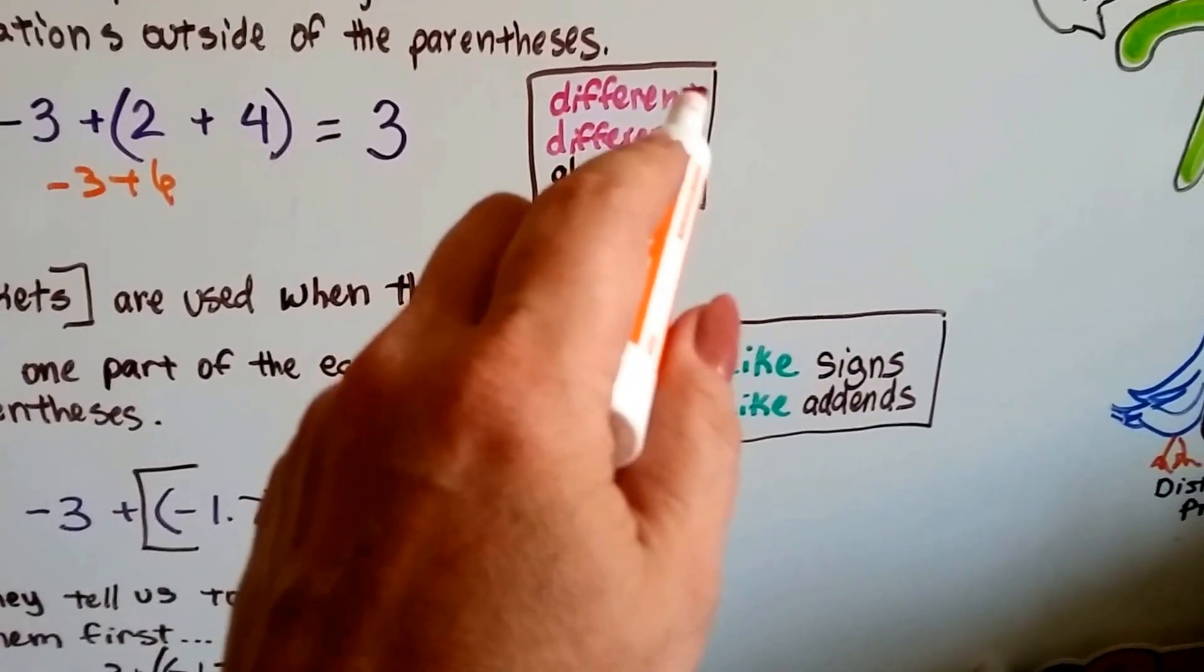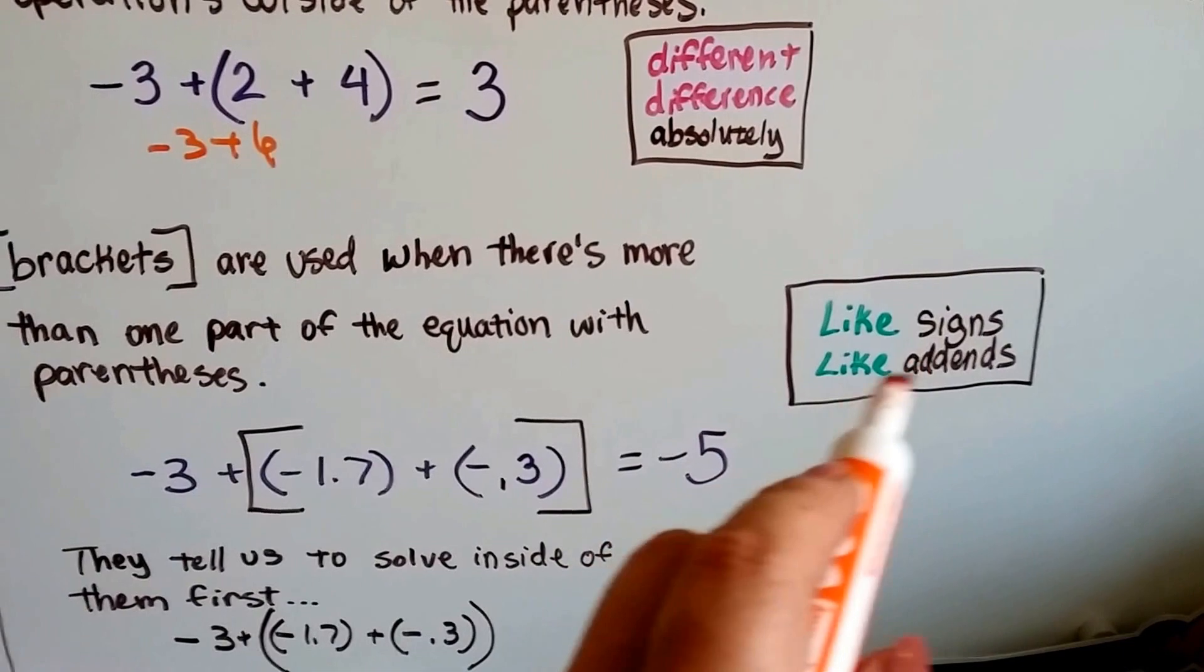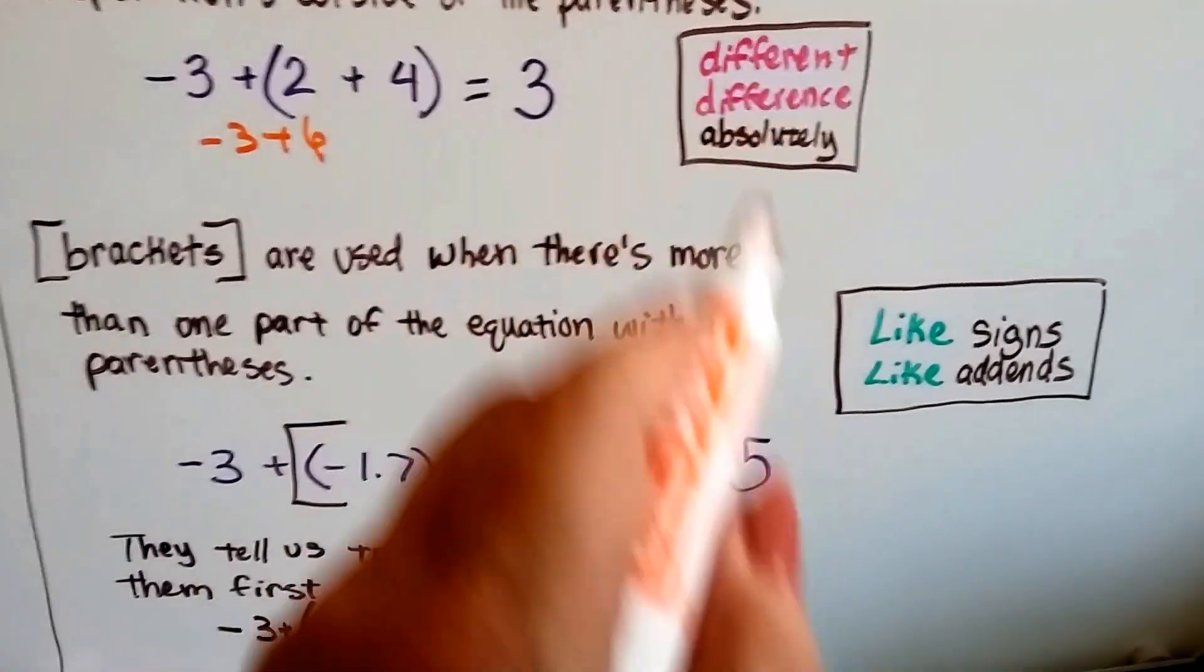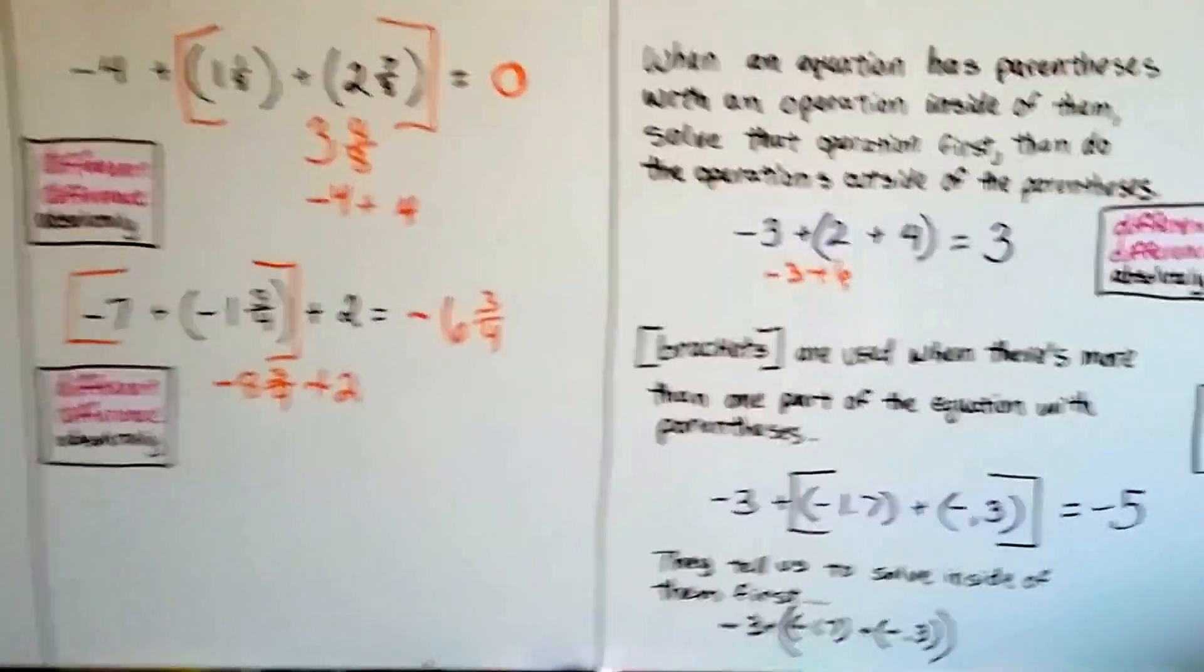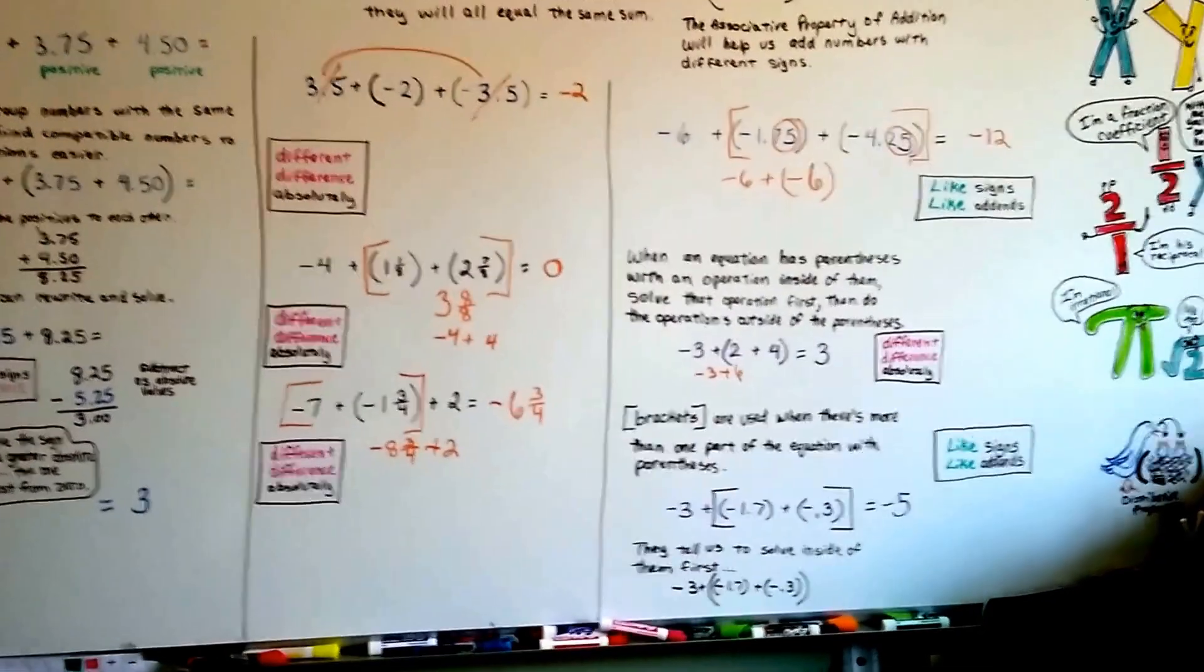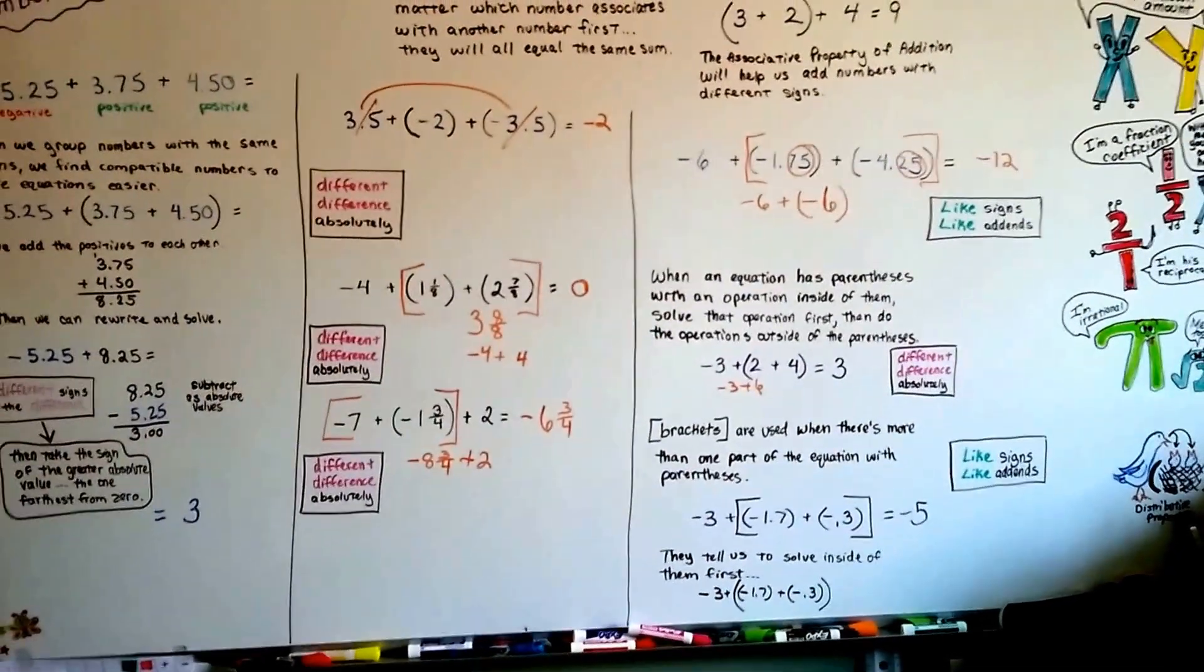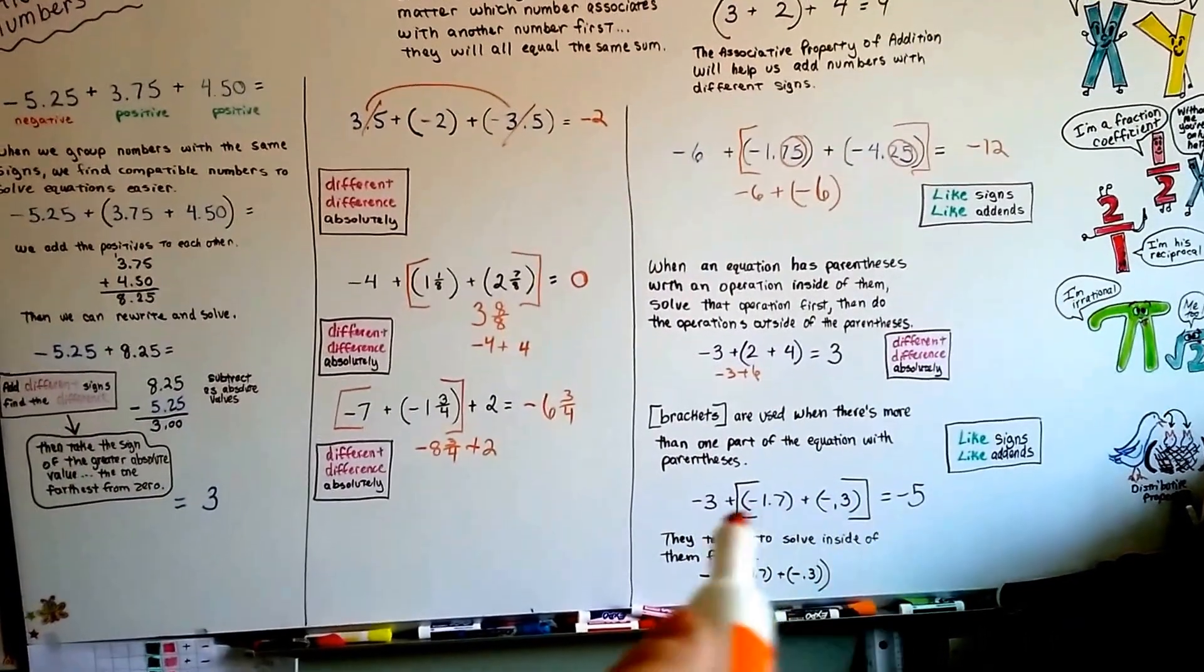So try to remember these two rules, different, difference, absolutely, and like signs, like addends. These are pink, these are green. Hopefully, that's going to help you when you do a test. It'll pop into your head with the colors and go, oh, different, difference, absolutely. That means find the absolute value after you find the difference, right? And if the signs are like, it's like the addends. Okay?